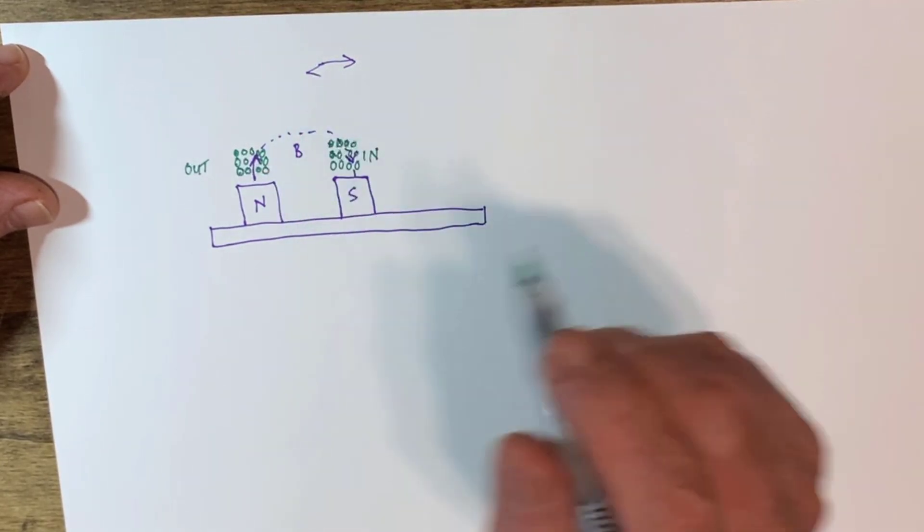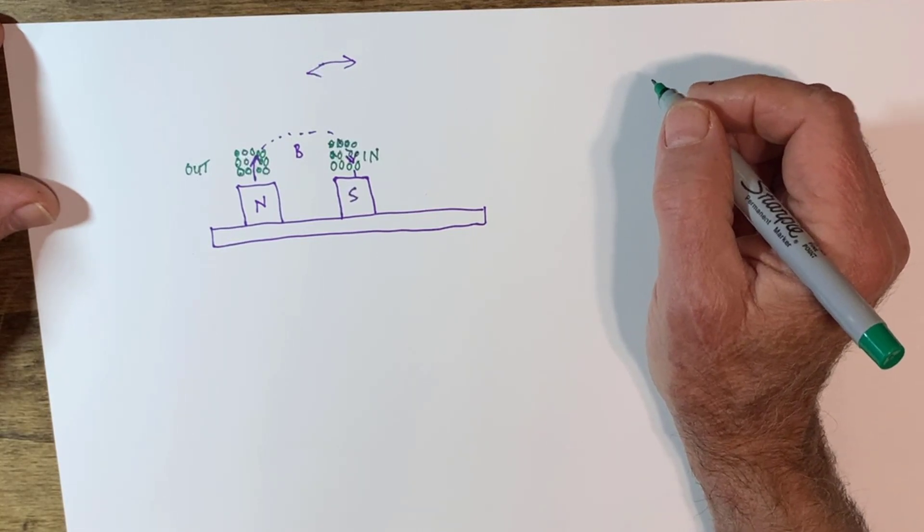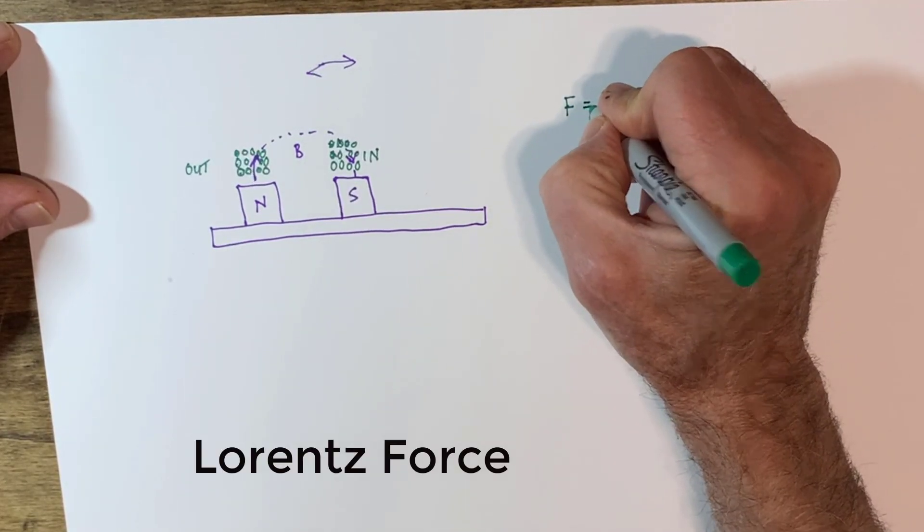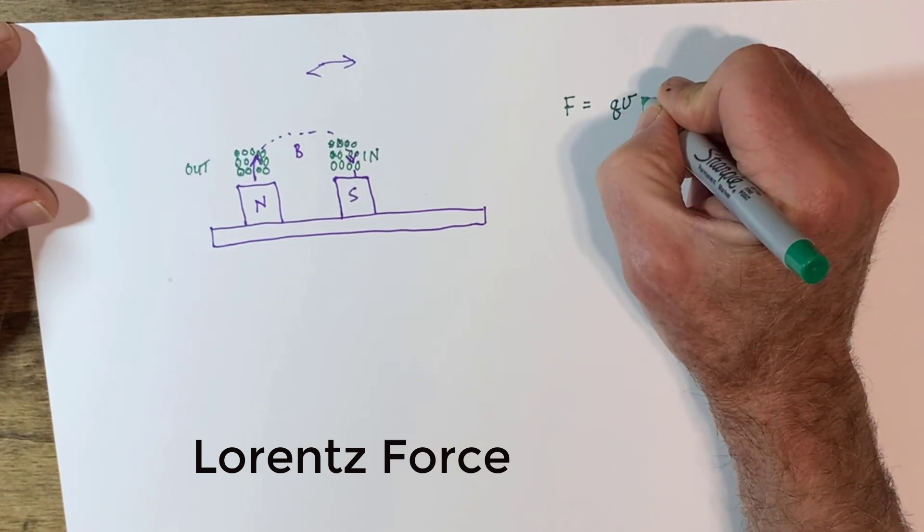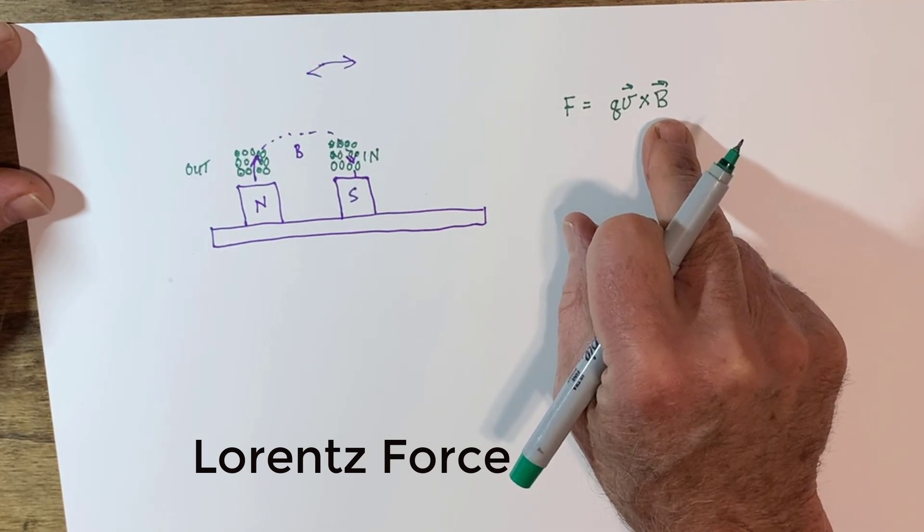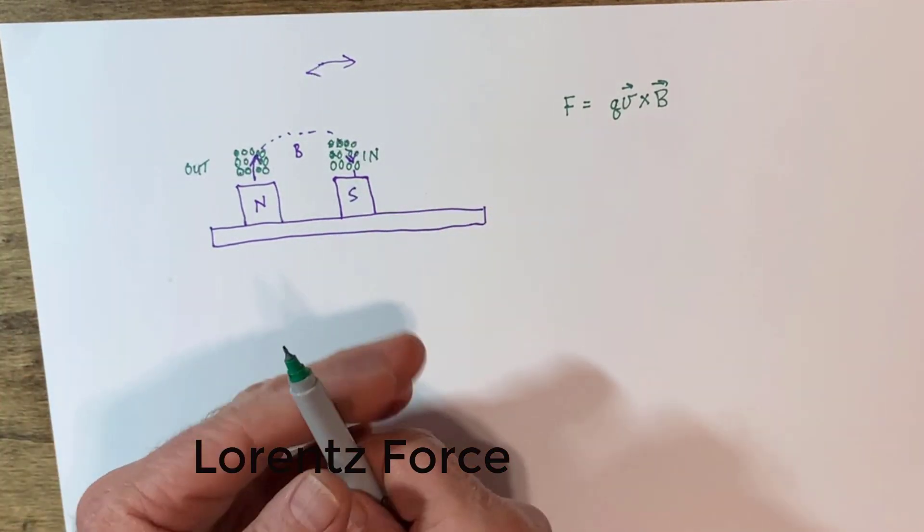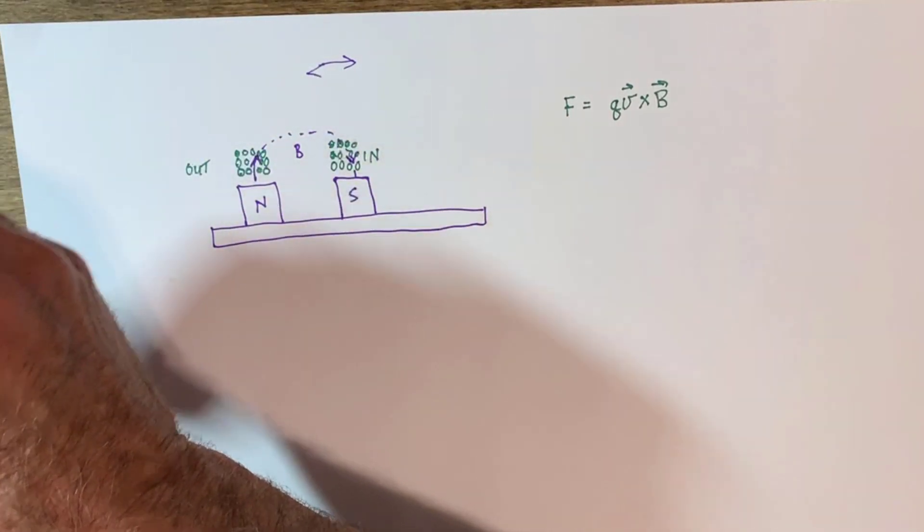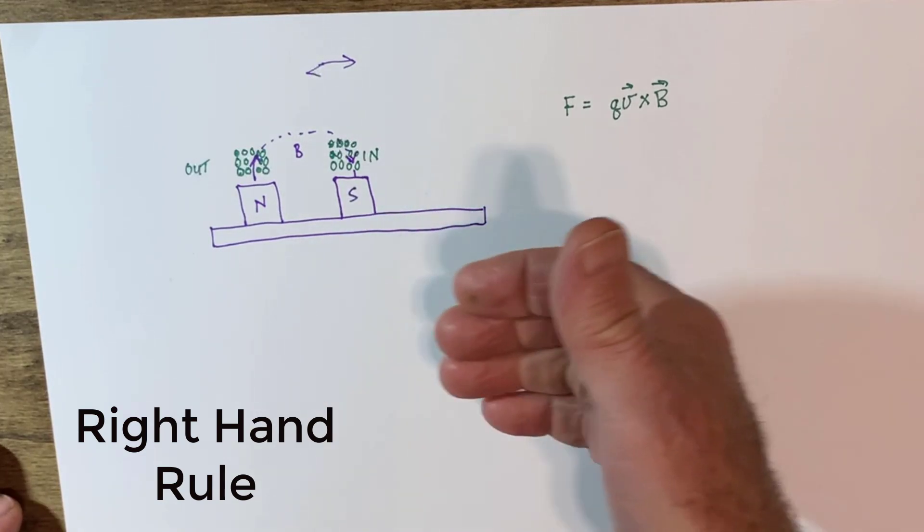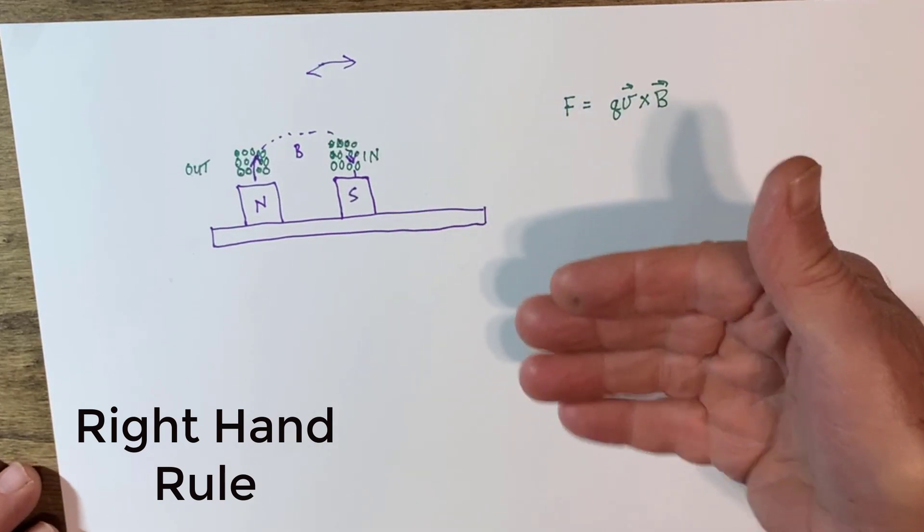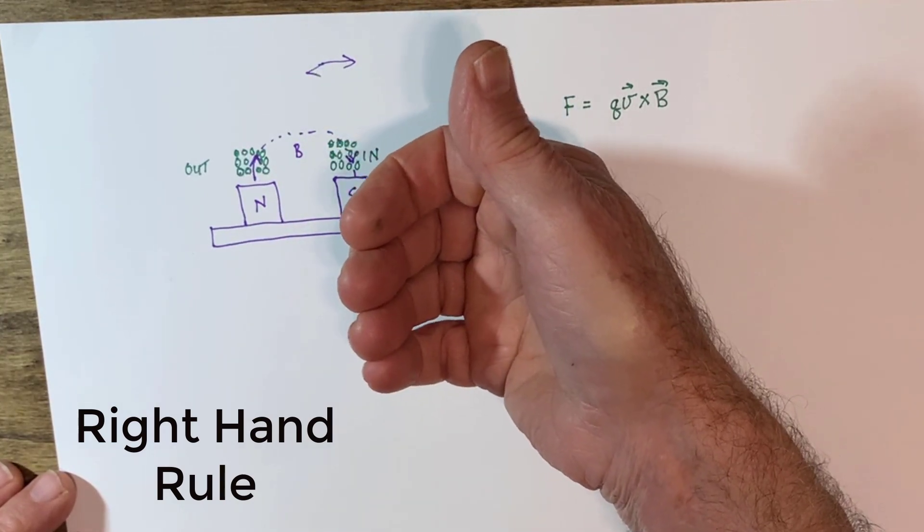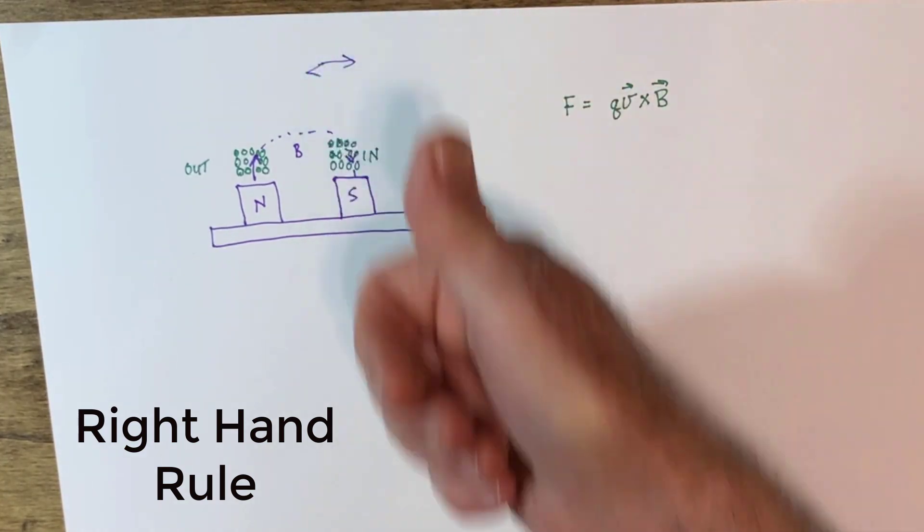So in physics, we have Lorentz's law, which is that the force from a current in a magnetic field is equal to the charge times the velocity crossed with the magnetic field. And here, the velocity and the magnetic field are vectors. So a simple way to think about that, I hope you can see what I'm doing with my hand, is we use something called the right-hand rule. Here's the velocity. It gets crossed into the magnetic field. That's V cross B.